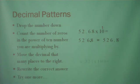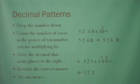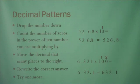Let's try one more: 6.321 times 100. Drop the original number. Now we're going to count the zeros in our power of 10 number, which in this case is 100 — 1, 2. Now we're going to move this decimal two places to the right — 1 and 2. Now we rewrite the answer with the decimal in the correct spot. These are decimal patterns.